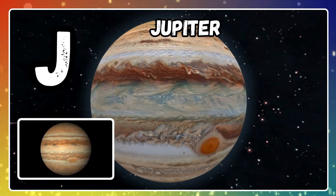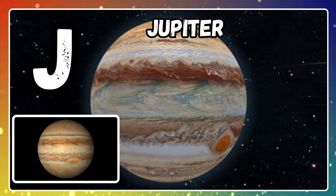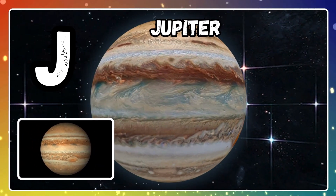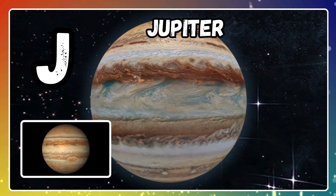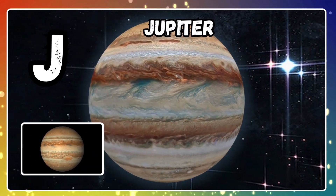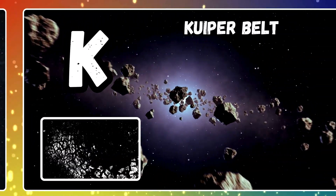J is for Jupiter. Jupiter is the biggest planet with a giant red storm.